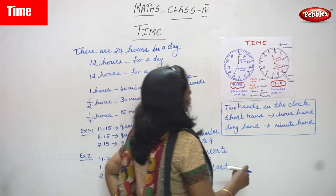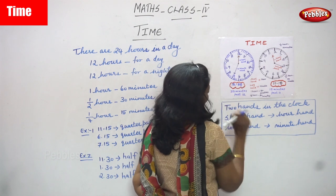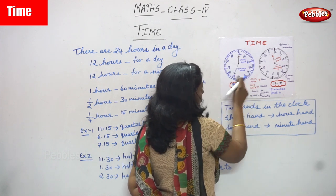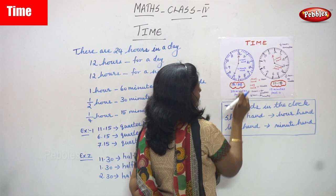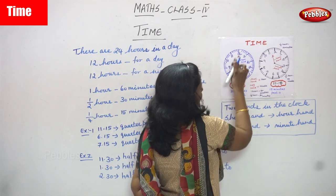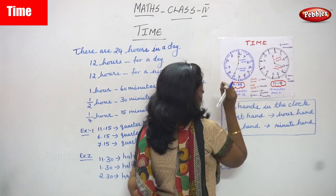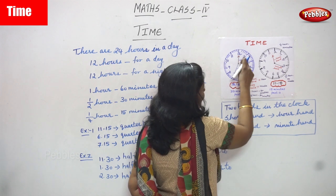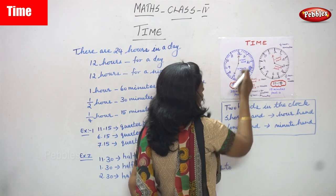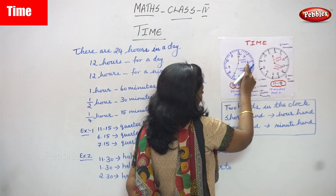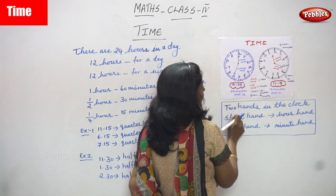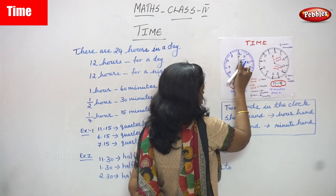I've told you this is a clock and this is another clock. Each number represents 5 minutes. Numbers represent minutes and each number represents 5 minutes. So 1 represents 5 minutes, 2 represents 10 minutes, 3 represents 15 minutes. There are two hands: one is a short hand and one is a long hand.